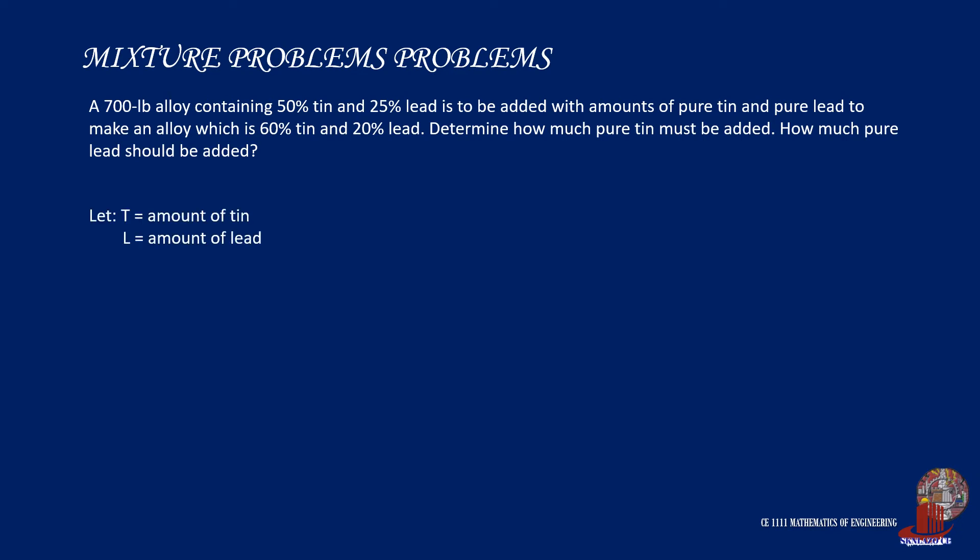Let us denote T for the amount of tin and L for the amount of lead. Considering the original alloy, the tin content being 50% tells us that the mass used is 350 pounds. 25% lead tells us that the alloy carries 175 pounds of lead.